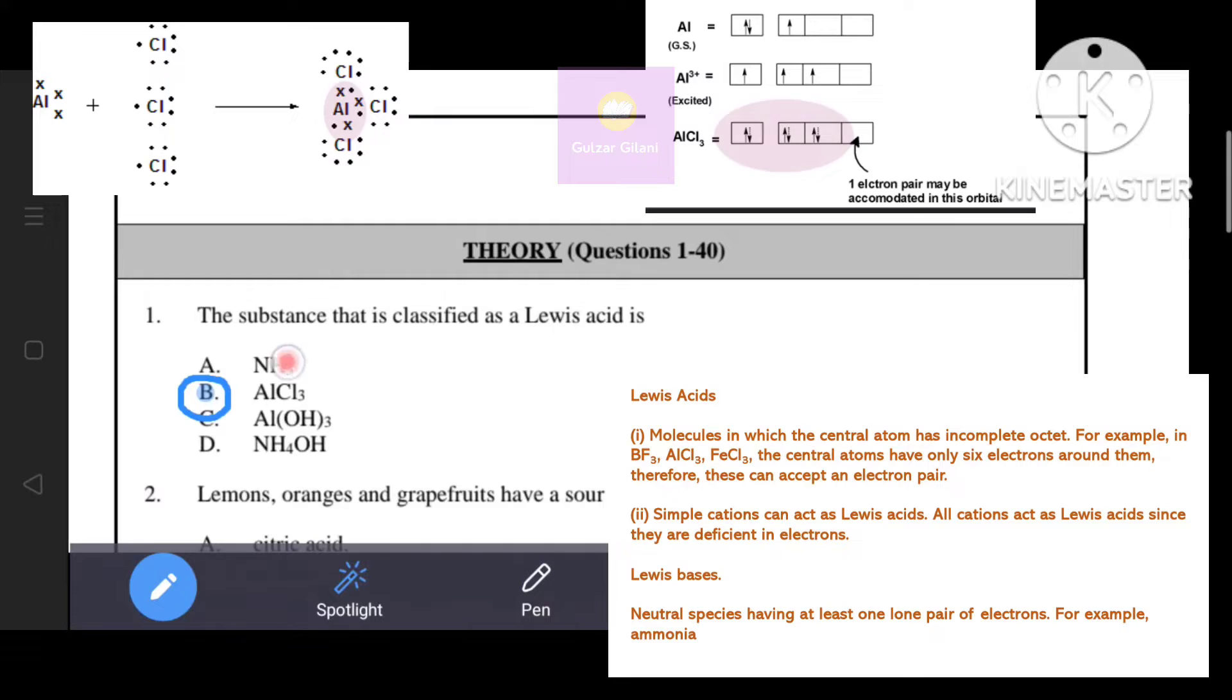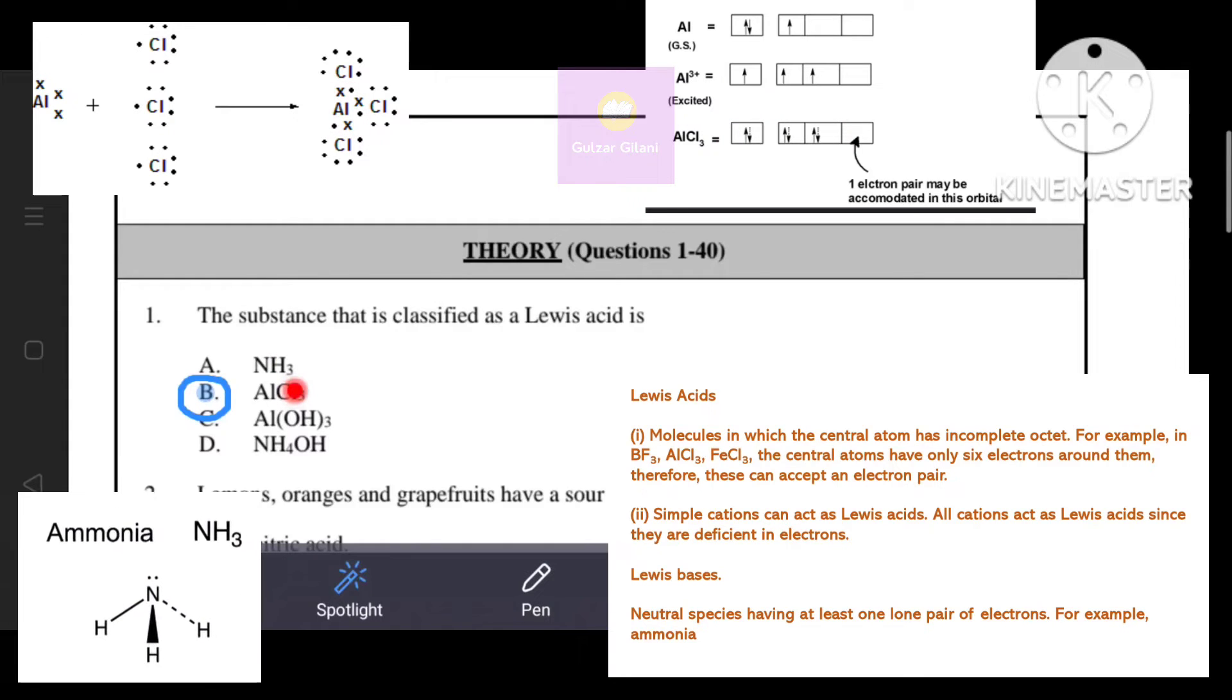Mostly students may confuse A or B. A is not the correct answer because nitrogen has one lone pair. As you know, neutral species having at least one lone pair of electrons acts as Lewis bases. That's why option B, AlCl3 is the correct answer.